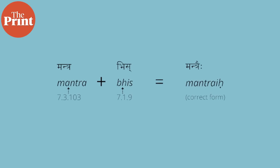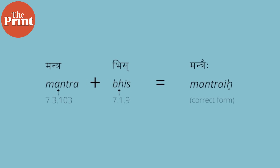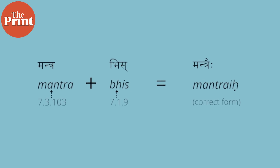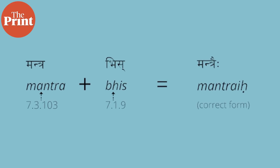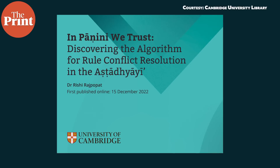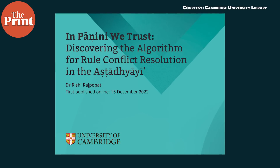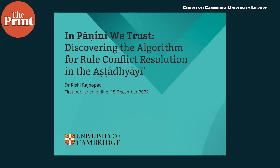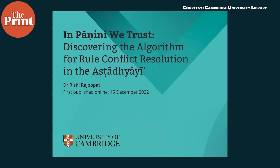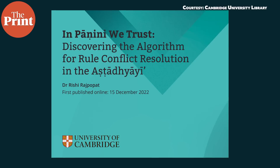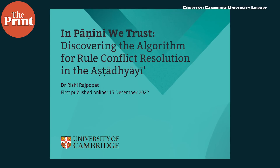So in this example, the rule for 'bhis' is applicable, which replaces 'bhis' with 'is' and ultimately yields the word 'mantrais,' which is the correct answer. His thesis illustrates this with a number of other examples as well. His work contradicts those of many notable scholars before him and rejects their long, roundabout solutions to rule conflicts in Sanskrit in general.